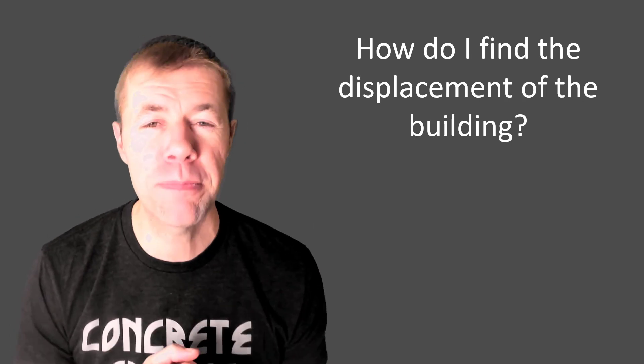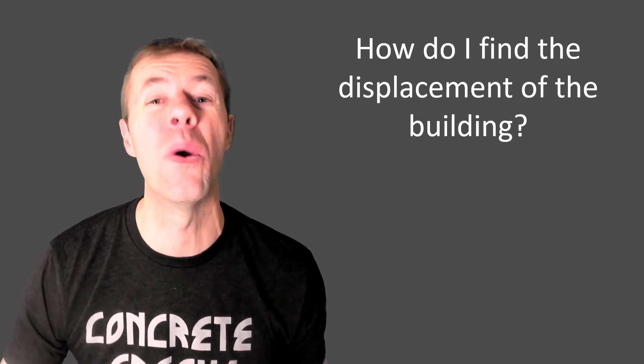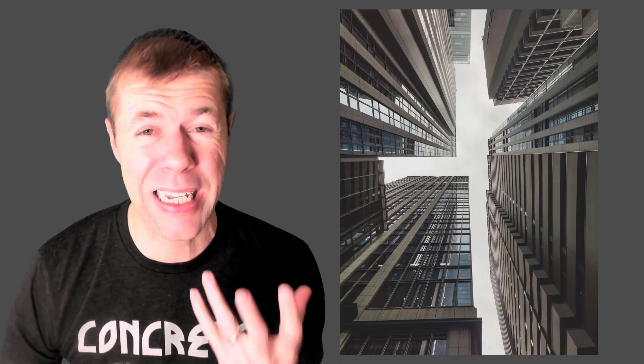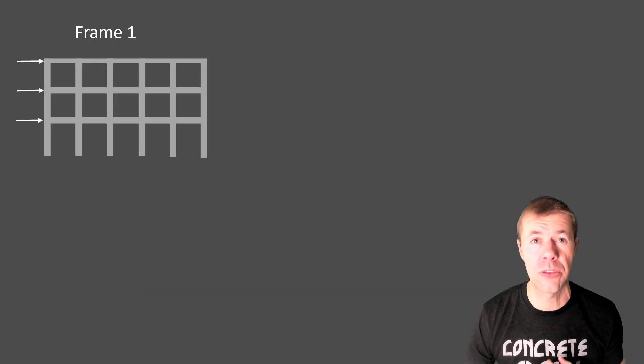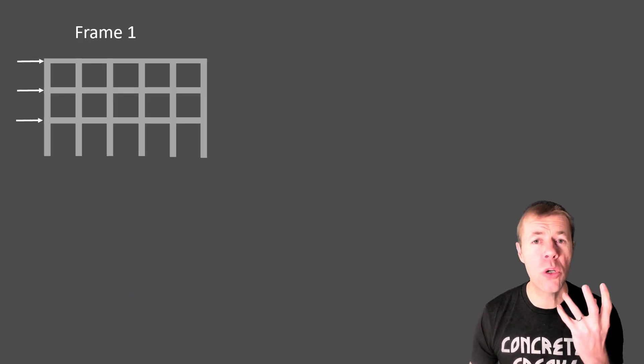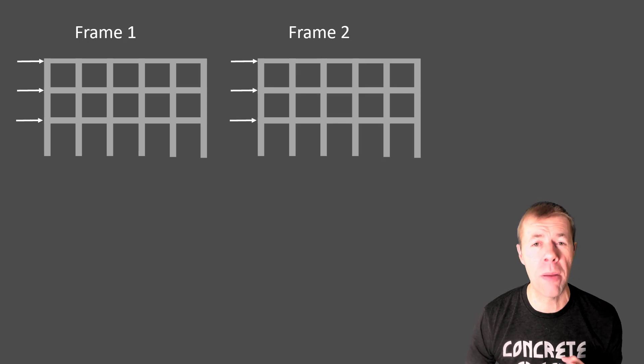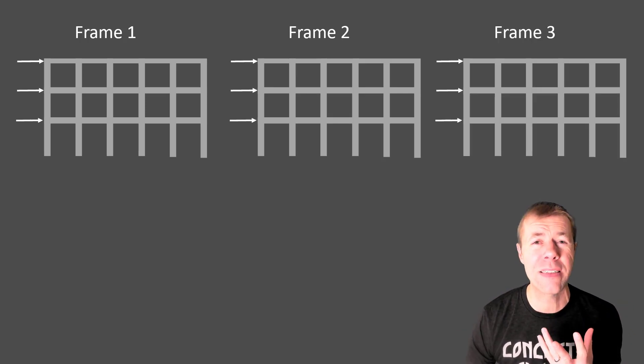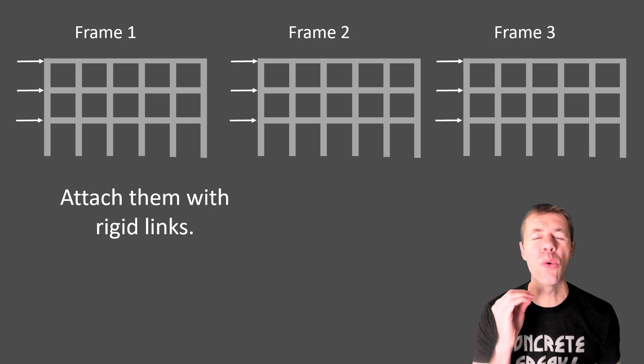So how do I find the displacement of a building? One might ask you. And this is called the drift. Why would you do this? If I have all these buildings like this, we're concerned that they might smack together. That would be horrible, right? And in high rise structures, drift often ends up controlling, especially in large cities. But what you would do is you could hook up frame number one, frame number two, and frame number three, put them all in your program, and you attach them with something called a rigid link.